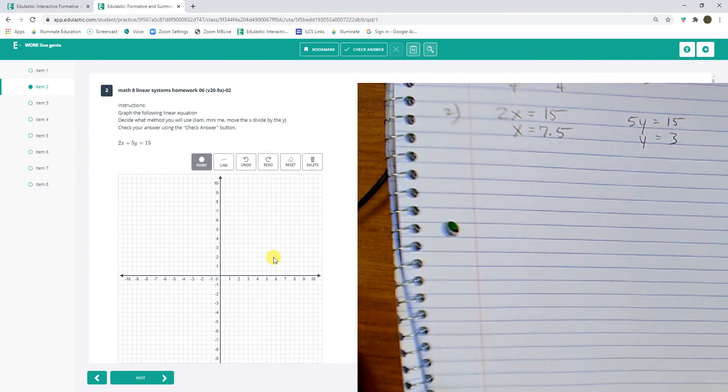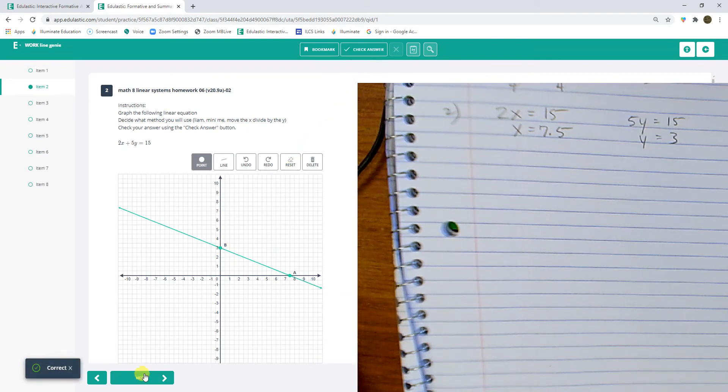And I can graph the 7.5 on this. x equals 7.5, y equals 3. Check it. Looking good. Next problem.